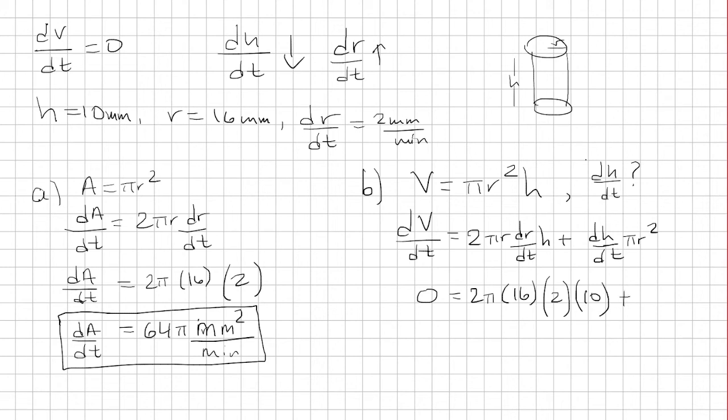Plus dh/dt, that's what we need to solve for, so I'll just leave it as it is. That's π, and then r is 10, sorry, r is 16. So that's 16 squared.